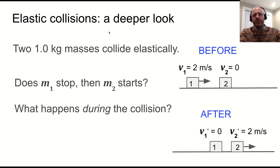If you look at an example, two 1-kilogram masses collide elastically. M1 stops, then M2 starts. What happens during the collision? How does it actually happen?